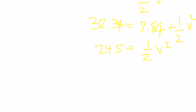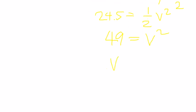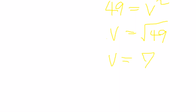So 24.5 times 2 is 49, and then that's V squared. Then you take the square root of 49, and V is 7. So her maximum velocity is 7 meters per second.